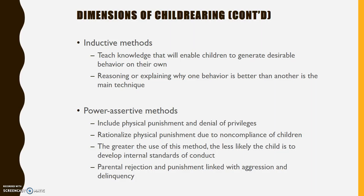Power assertive methods can include physical punishment and denial of privileges. Parents often rationalize physical punishment when children are being non-compliant. The greater use of a power assertive method, the less likely the child is to develop an internal standard of conduct — meaning the more power assertive the parent is, the less likely the child is going to be able to regulate his or her own behavior. Parental rejection and punishment is linked with aggression and delinquency. The more this method is used, the more we find that kids are aggressive and delinquent.